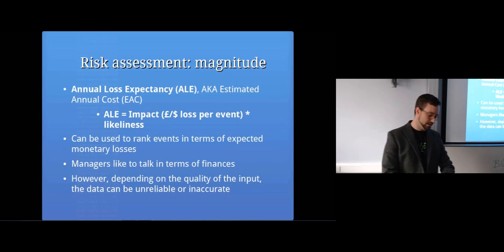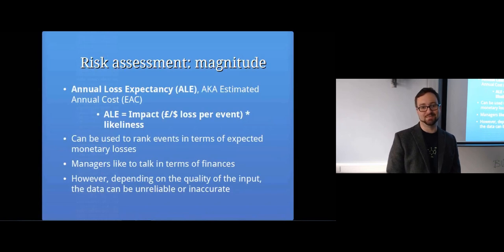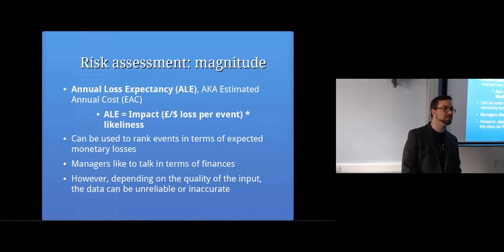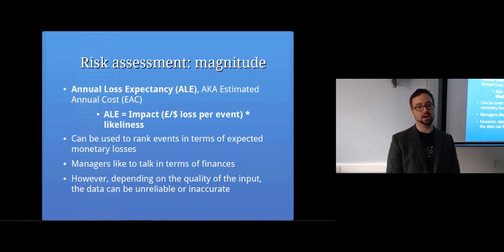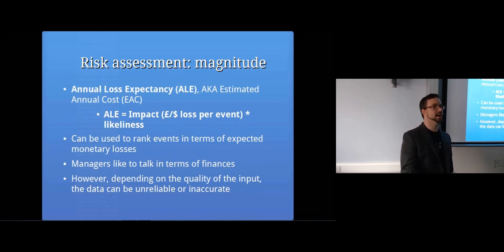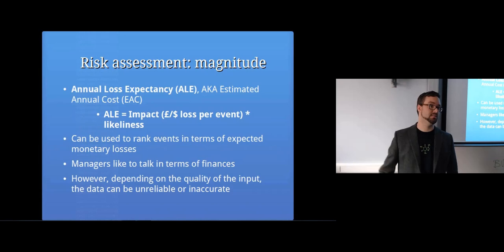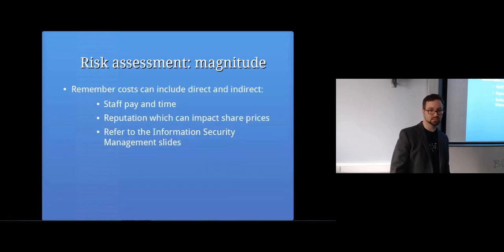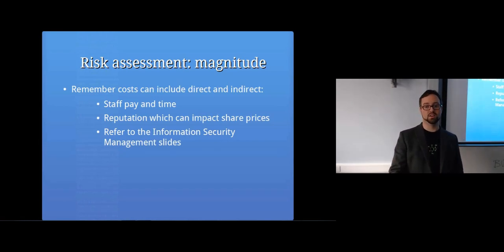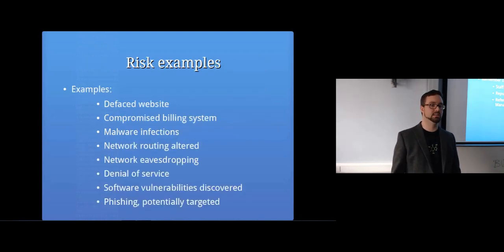Annual Loss Expectancy (ALE), also known as Estimated Annual Cost (EAC), is basically the impact — the money it would cost — times the likelihood. You can use that to calculate how much money things cost, and it helps when you're talking to a manager: this is the annual loss expectancy if this were to happen, we would lose this much money, but we can invest in this thing at this cost. Costs can include direct and indirect — paying staff is an obvious direct one, but reputation and other factors matter too.